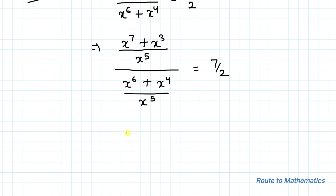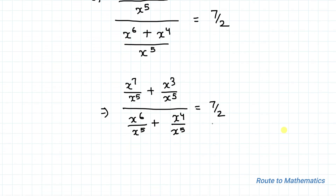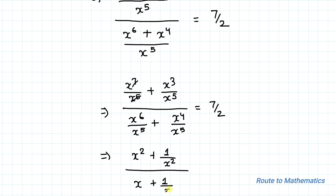Now we can write this as x to the power 7 divided by x to the power 5, plus x cubed divided by x to the power 5, all divided by x to the power 6 divided by x to the power 5, plus x to the power 4 divided by x to the power 5, equals 7 by 2. After cancelling, we get x squared plus 1 by x squared, divided by x plus 1 by x, equals 7 by 2.